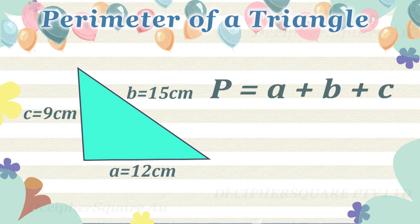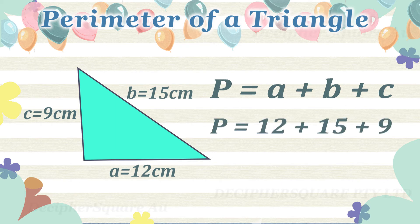In this example, the lengths of the three sides as shown in the figure are 12 cm, 15 cm, and 9 cm. That is, the perimeter here is 36 cm.